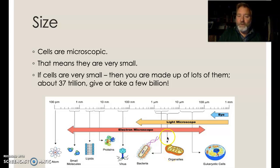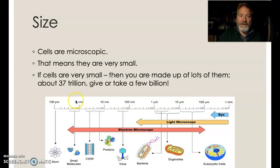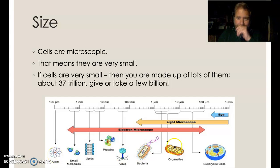Organelles: you can pick up the bigger ones on a good light microscope, but the smaller ones need electron microscopes. Bacteria — these prokaryotes — are much smaller. Viruses aren't living; they're a non-living thing and are even smaller again. Proteins, lipids, and other small molecules get smaller and smaller down to the atom. We're talking one nanometer scale, down to 100 picometers for an atom. This eukaryotic cell here is about 100 micrometers — still less than a millimeter.